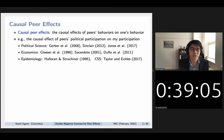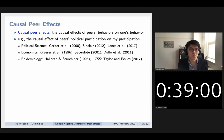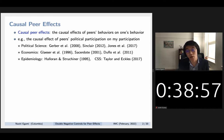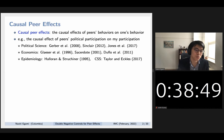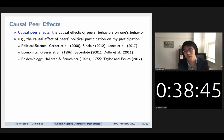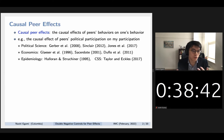In economics, people have studied peer effects on criminal behaviors, education, job attainments, and so on. In epidemiology, people study similar concepts as contagion of infectious disease, which we all know is very important to our lives. In computational social sciences, people have studied peer effects on online behaviors, such as sharing fake news and so on.